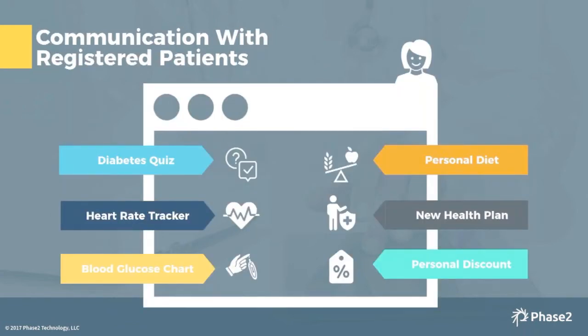Once you've gotten them to sign up, you can really start to tailor their experience — now you know a lot more about them. Perhaps they've connected a heart rate tracker like a Fitbit, or maybe they've signed up for personal diet reminders, getting recipes sent to them via email. All of these things can help your patients with higher degrees of compliance for the recommendations from their healthcare provider. That can increase efficiency, as they're more likely to engage when content is tailored to their needs.